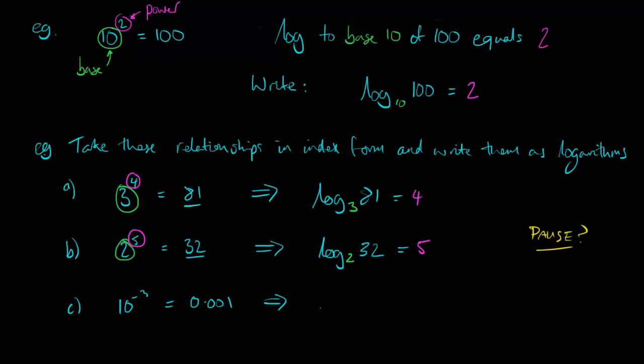Finally, another logarithm. In this case, the base is 10. So we write log to the base 10 of this number here. So log to the base 10 of 0.001 equals, and again, it equals the power, minus 3. Now I'd recommend you pause the video and just look at these three examples and try and see how the left-hand side relates to the right-hand side and get the idea stuck in your head.